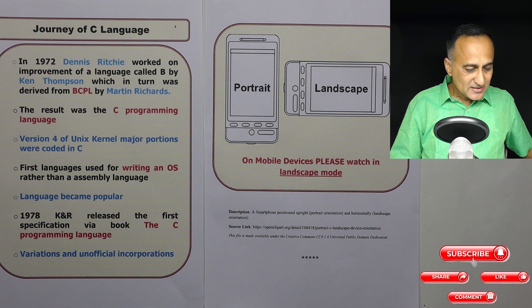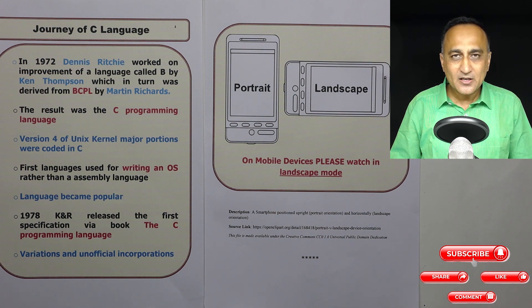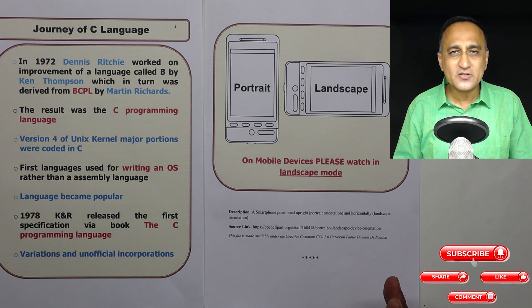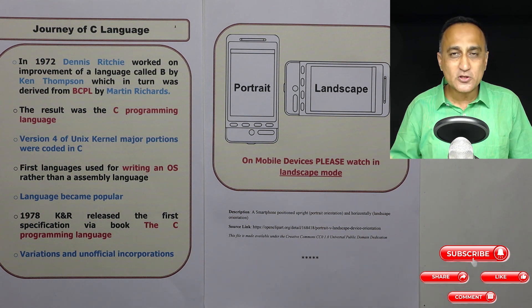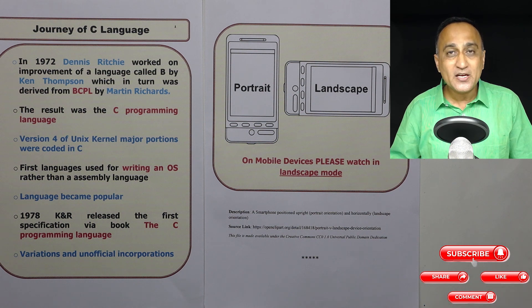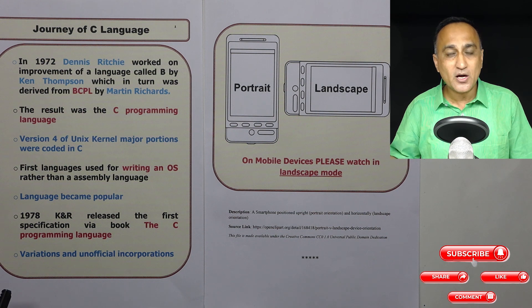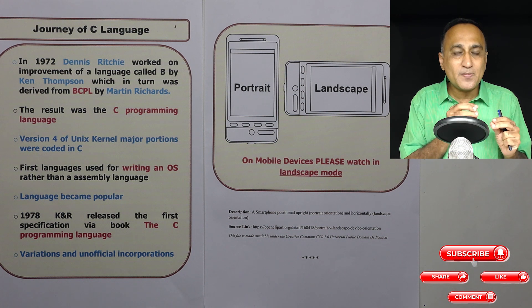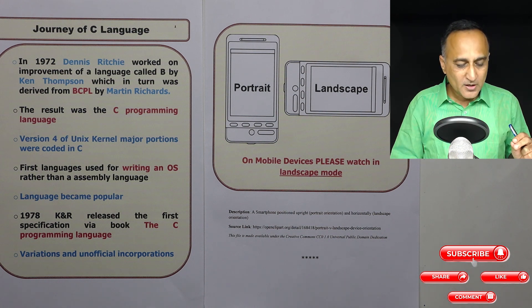The problem with C in the early days of '75 to '80 was that a lot of unofficial changes to the original C began to circulate. For example, one university's version of C was slightly different from another's. With hundreds and thousands of places using C with all these unofficial versions, something which could run in place X may not run in place Y, because the compilers used in one place supported different features from those in another place.